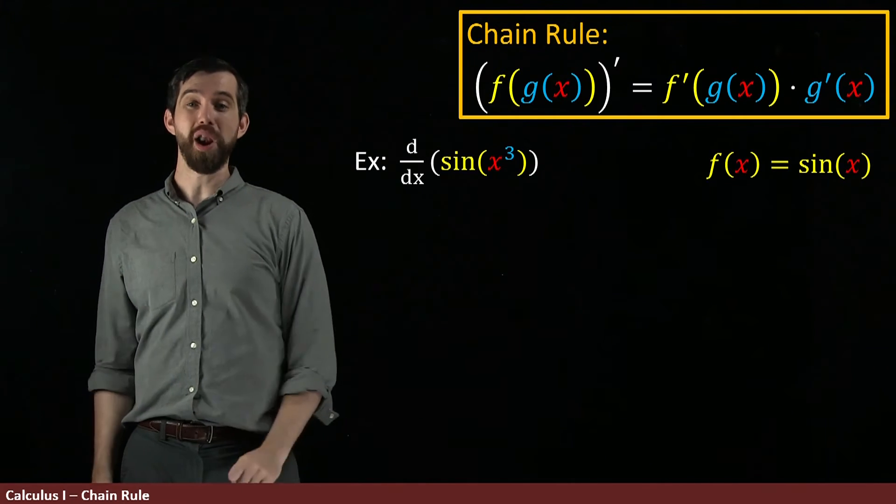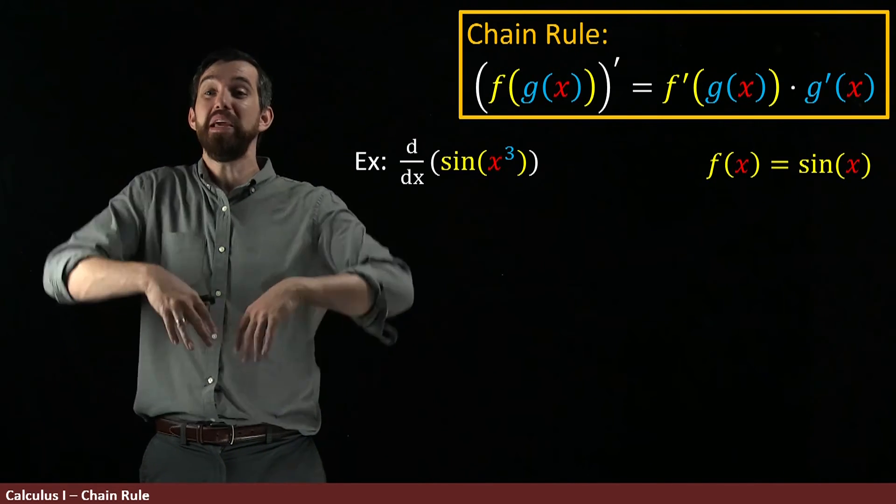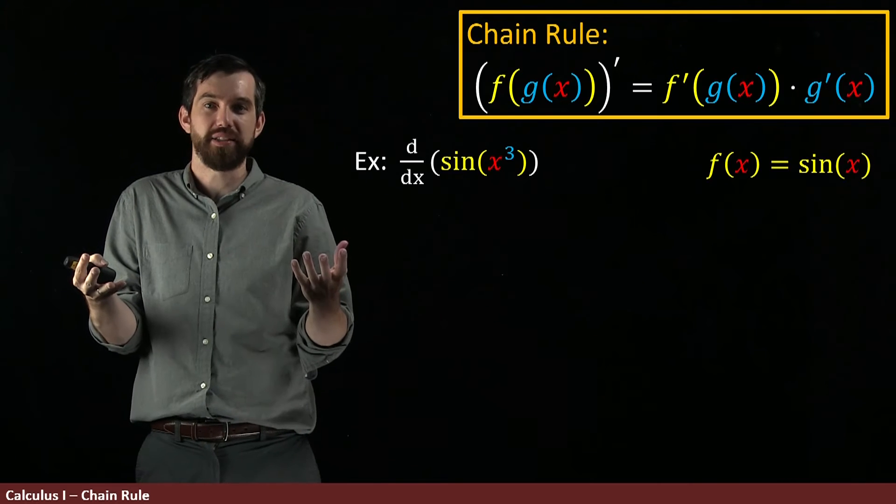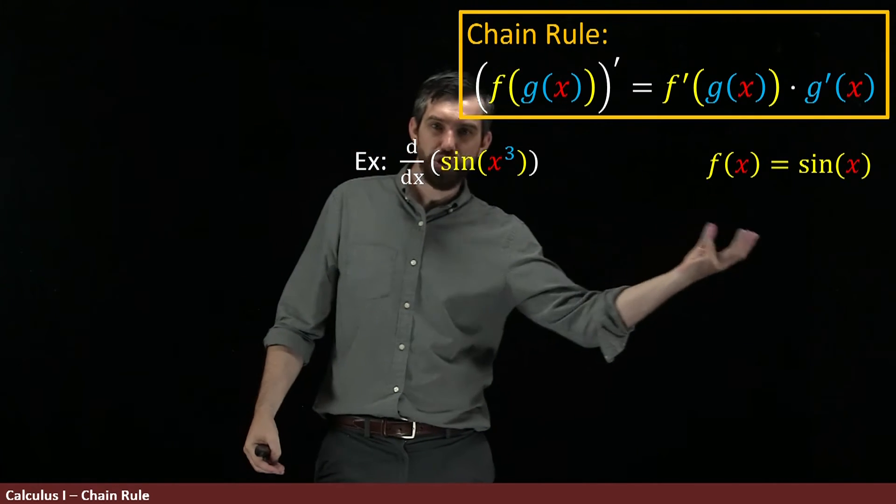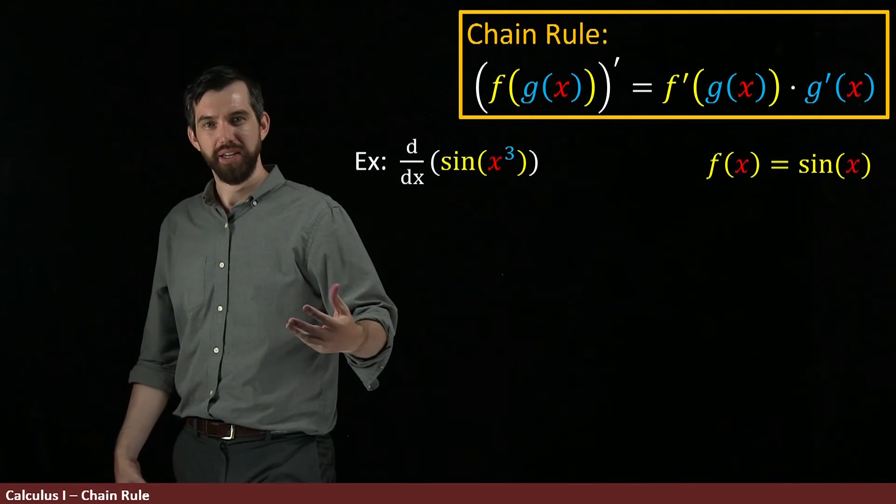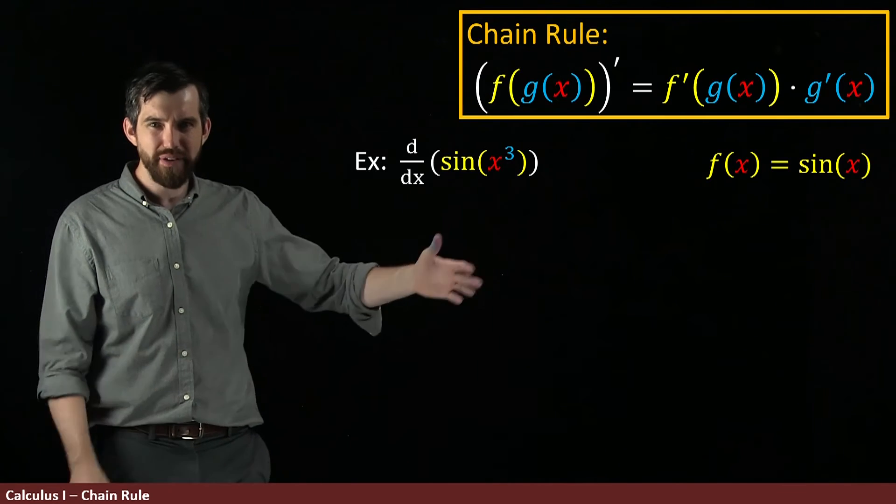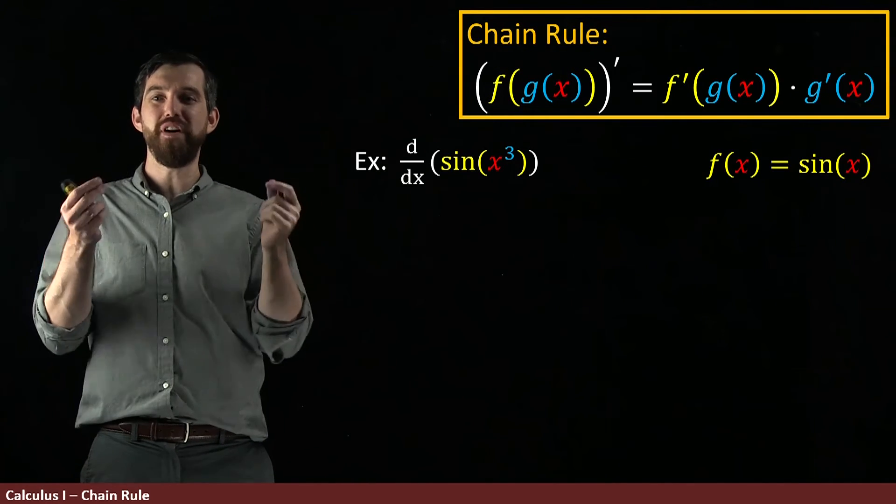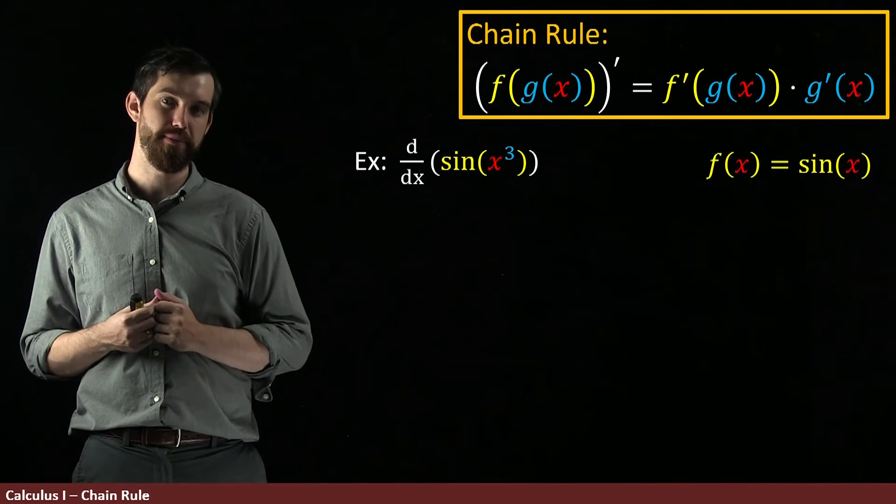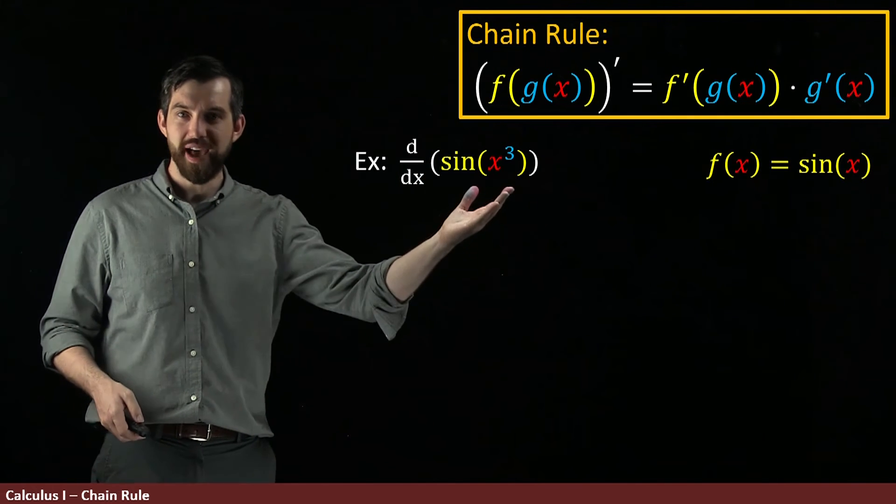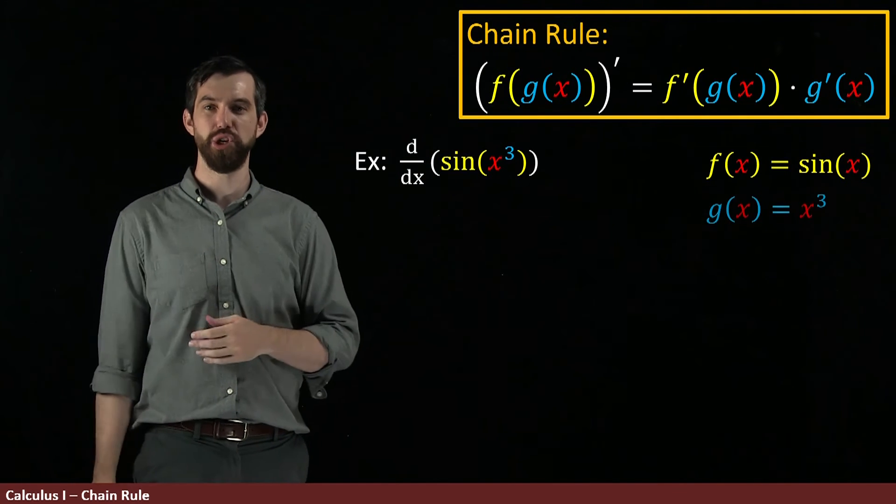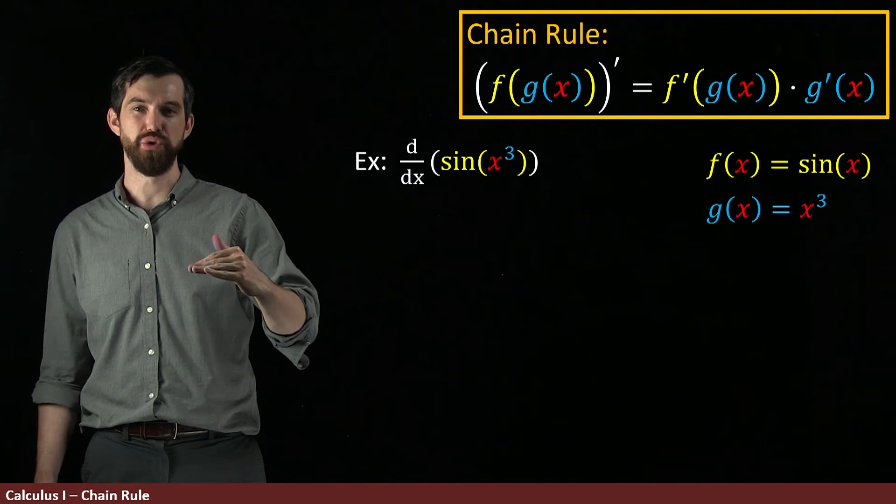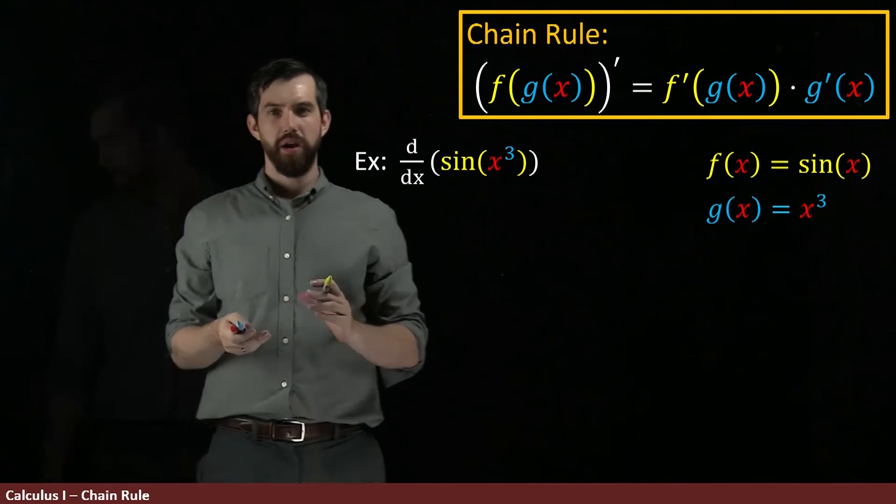In particular, one option for what the x could be is it could be the entire output g of x. So in other words, f of g of x would be sine of g of x. When I write f of x equals sine of x, I'm just saying what function is the f part of it. Likewise, the g of x, that's the inside. This is going to be x cubed, so g of x is the x value cubed.